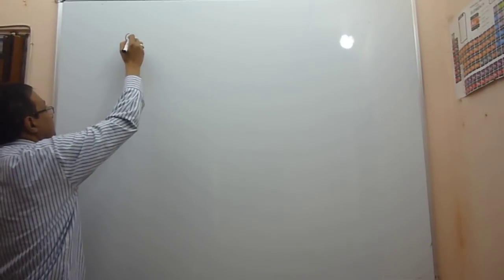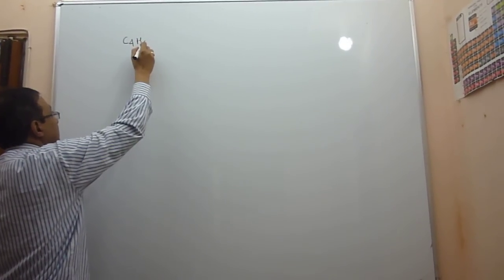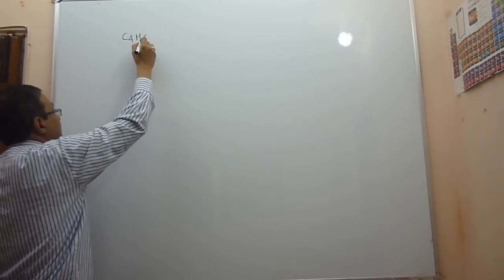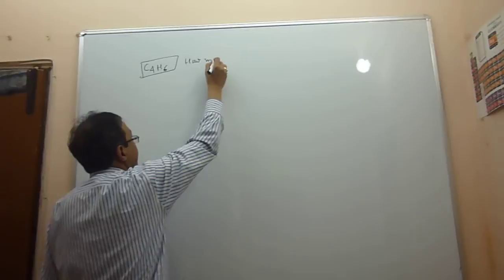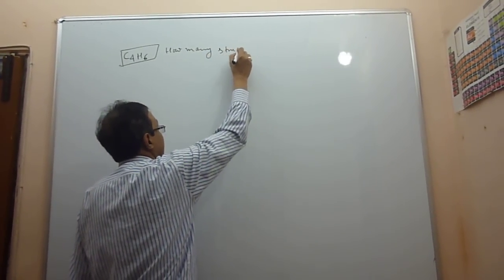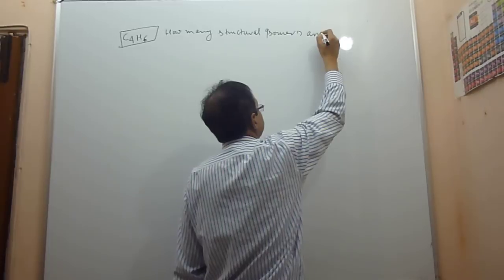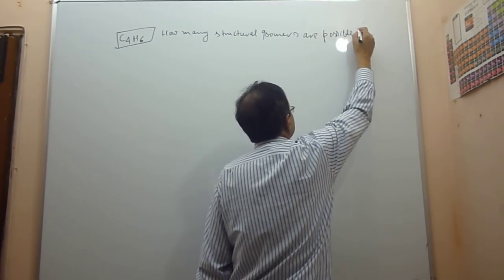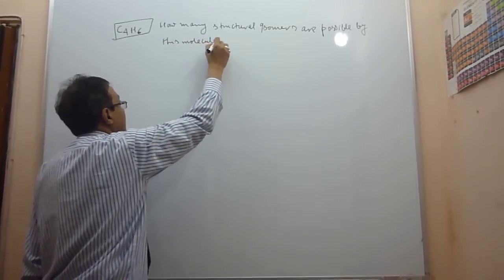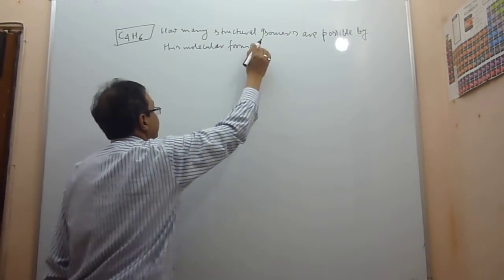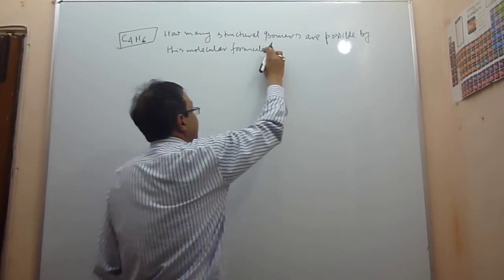Now I am going to take an example: the molecular formula C4H6. How many structural isomers are possible by this molecular formula?